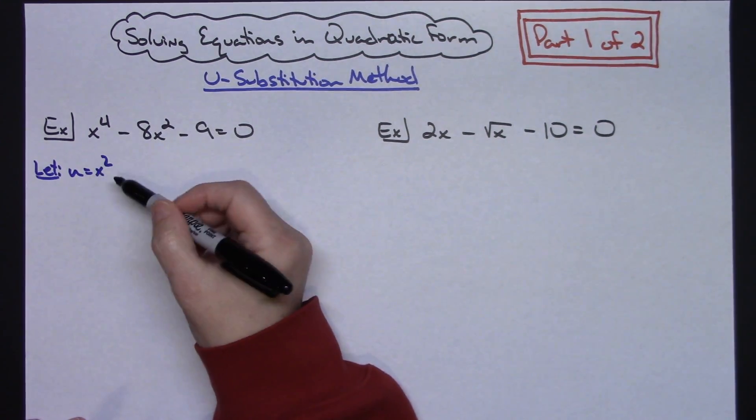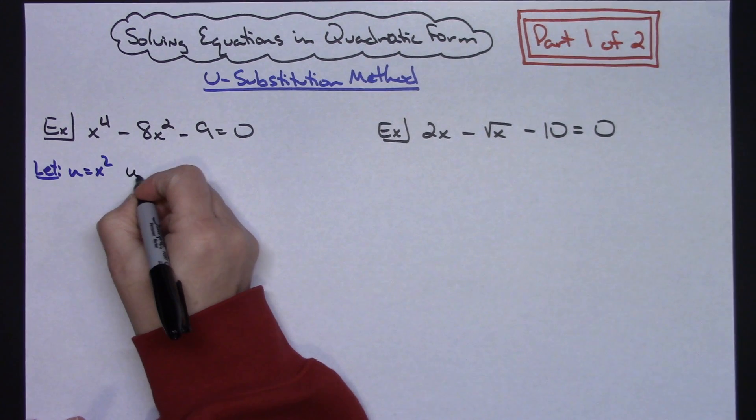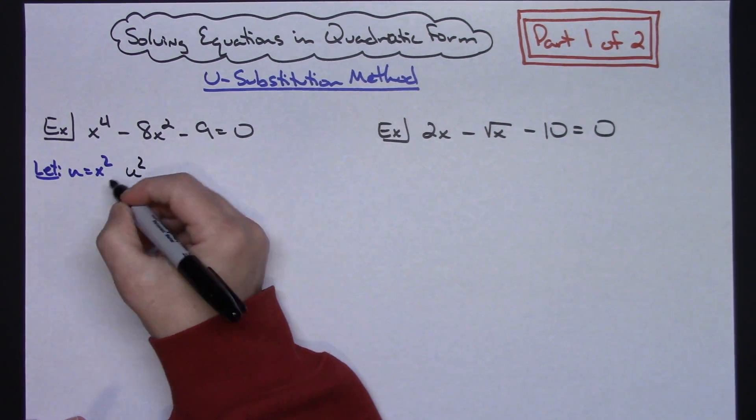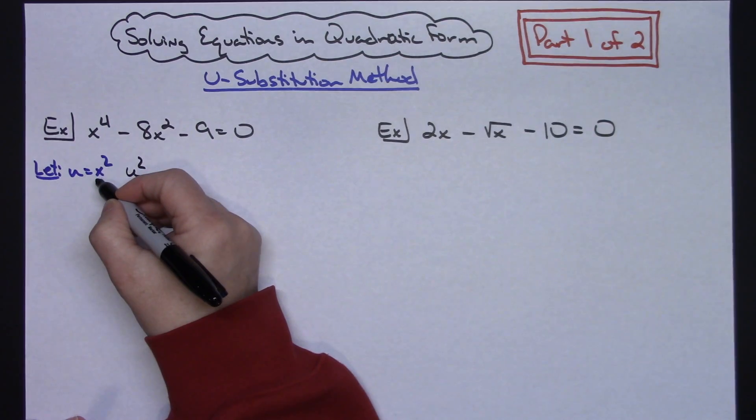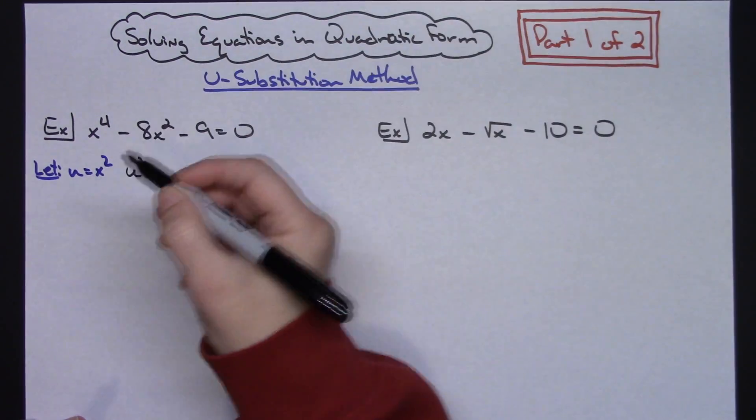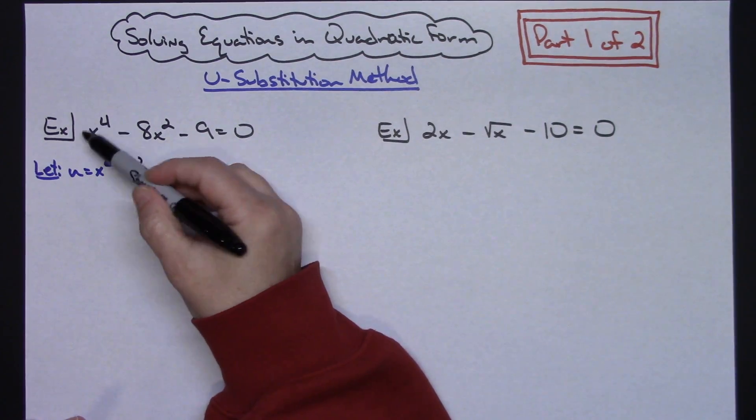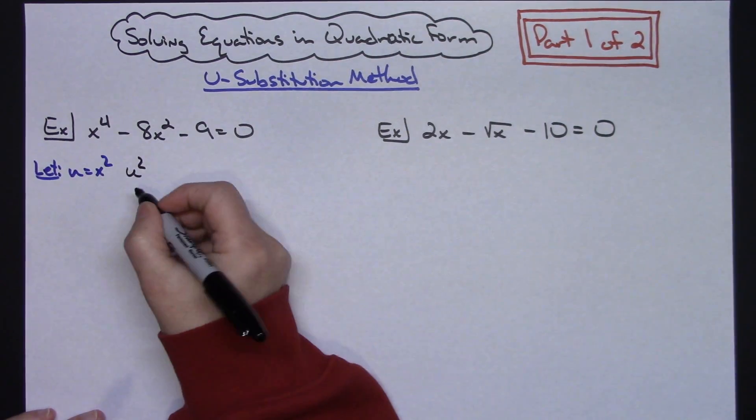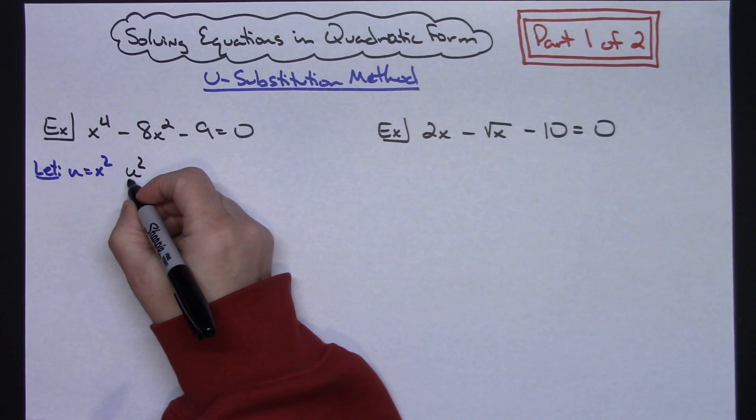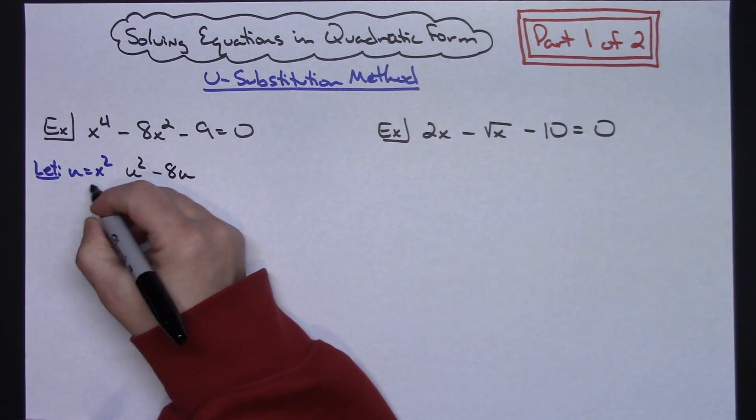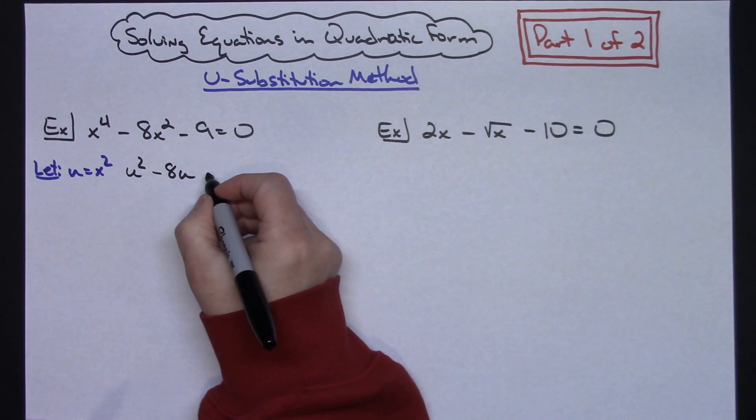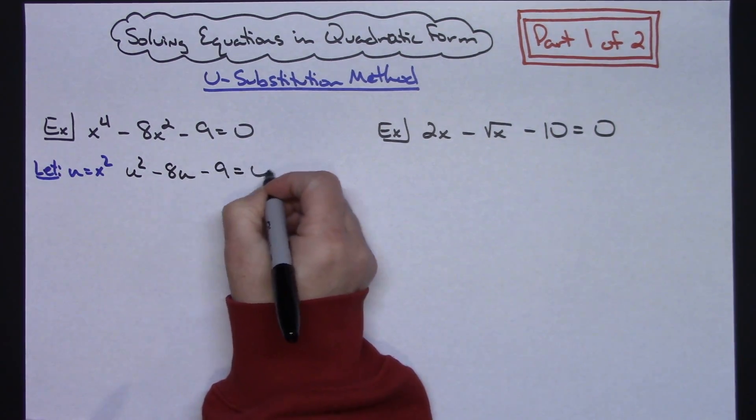Now if I say here to begin with that I have u^2, u is x^2. When I take x^2 and square it, that would be a power raised to a power, 2 times 2 is 4, so then that gives me that x^4 right there. So finishing this out then, u^2 - 8u, because we said u was x^2, and then -9 = 0.